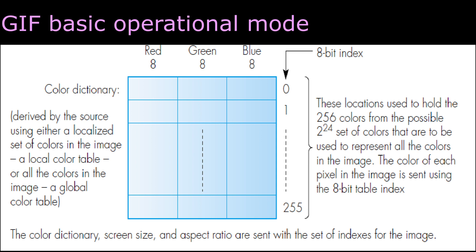When the pixel value or the color value matches with the particular color, then the corresponding index will be transmitted. From the encoder, the color dictionary, the screen size, and aspect ratio are sent along with the set of indexes for the image. Using this data, the decoder will decompress the image.